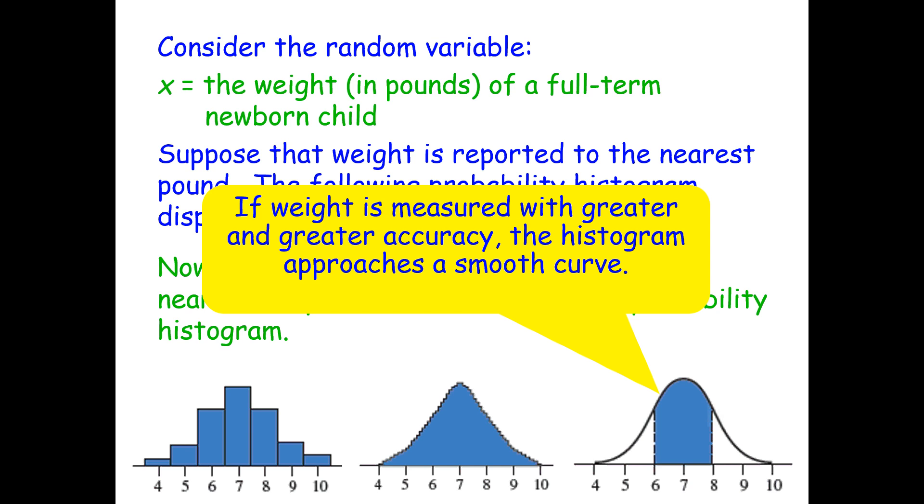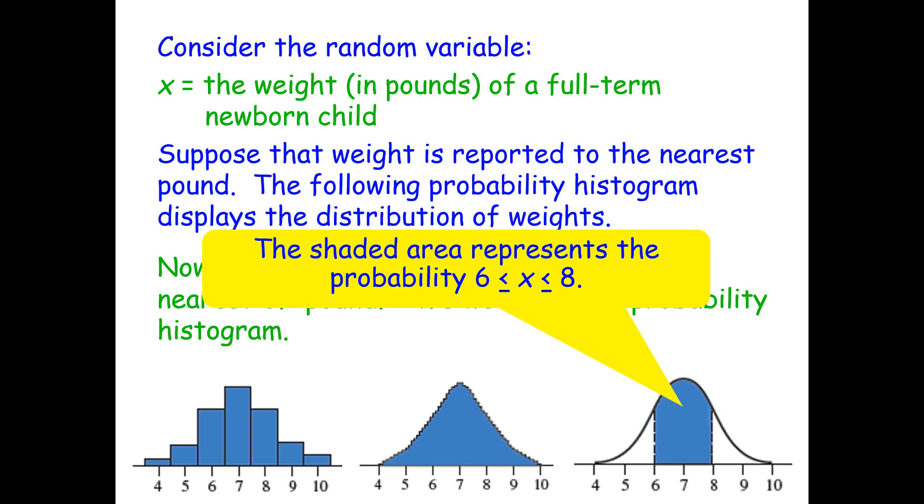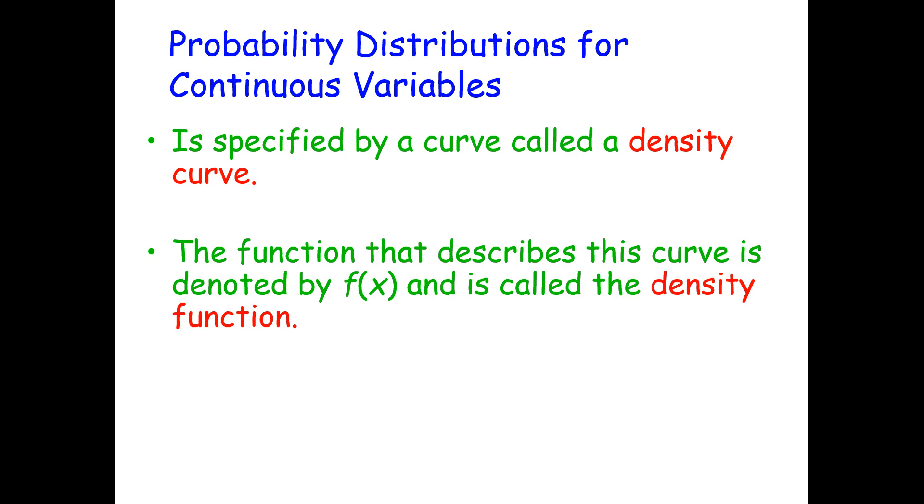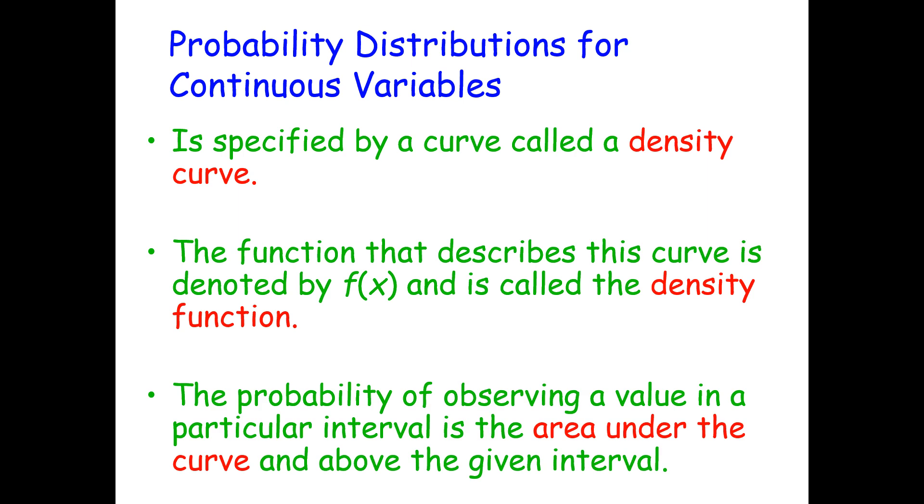Now in this particular histogram, the shaded area represents the probability between 6 and 8. As far as probability distributions for continuous variables, it's specified by a curve called the density curve. The function that describes this curve is denoted by f(x) and is called the density function. The probability of observing a value in a particular interval is the area under the curve and above the given interval.